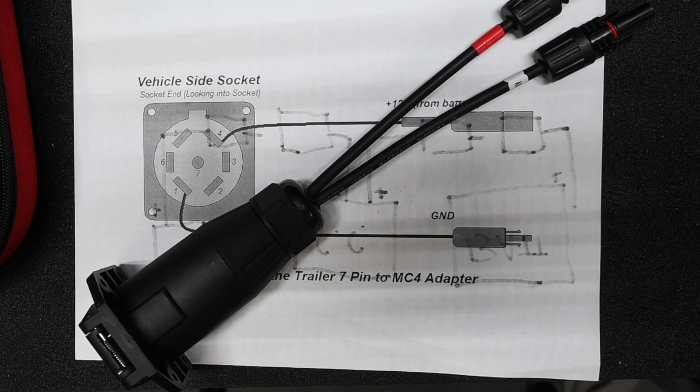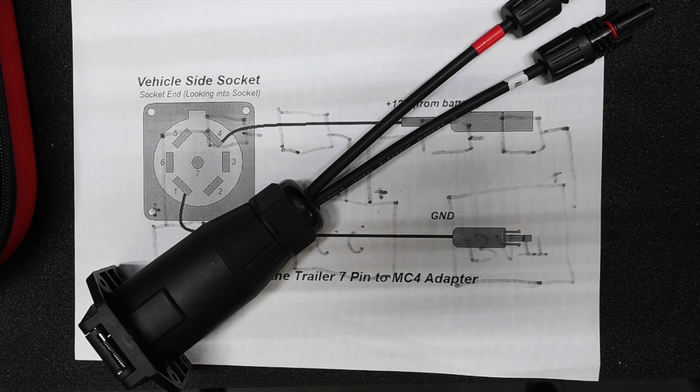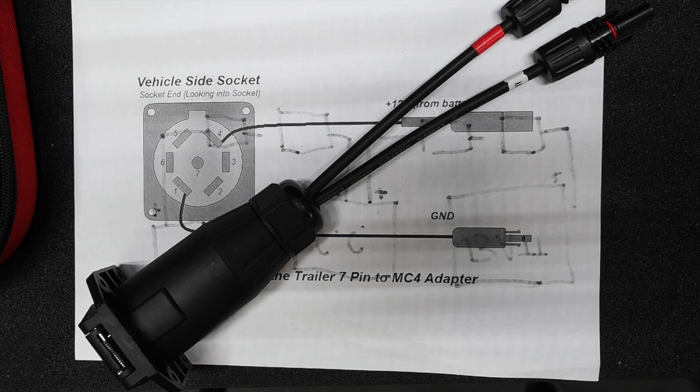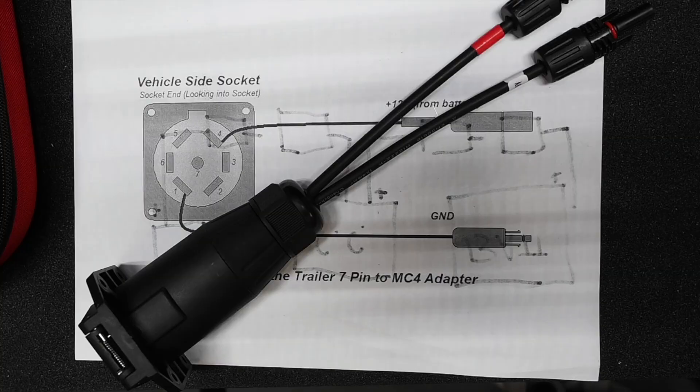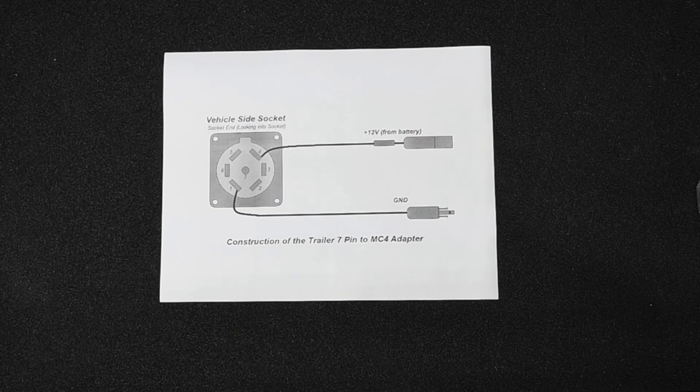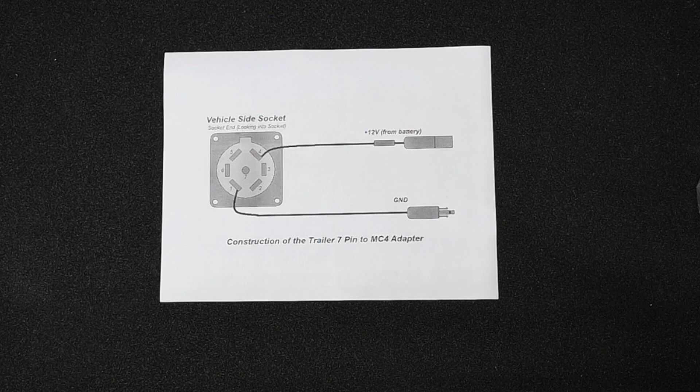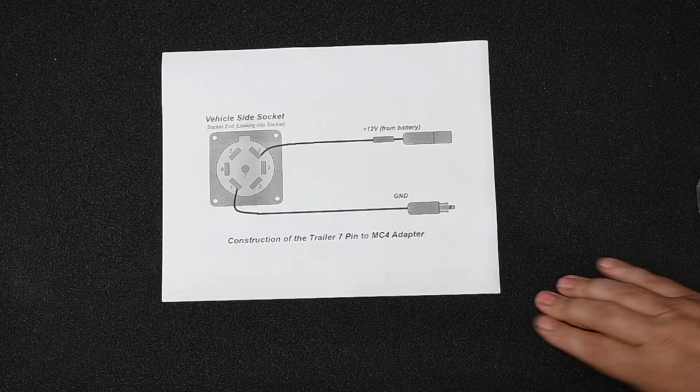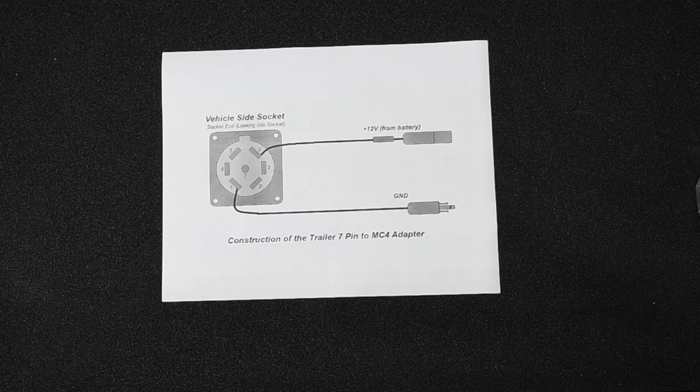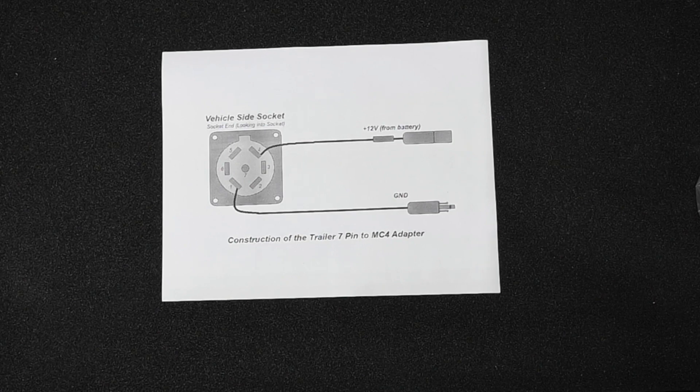Several months ago, as part of my suitcase solar video series, I published an idea for an adapter where you could use your RV's 7-pin trailer wiring harness to connect to the solar panel. You can find that video on my website, and I'll provide a link here. In that webpage I did produce this drawing, however I've had a couple comments where people were asking if I could do a step-by-step on how to construct the adapter.